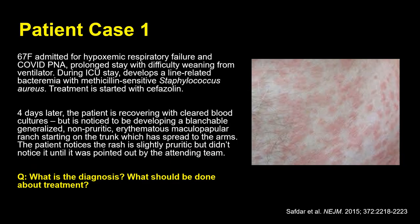Case 1: A 67-year-old female admitted for COVID-19 pneumonia requiring a prolonged ICU stay develops a line-related staph aureus bacteremia and is started on cefazolin. Four days later, she is discovered to have developed a blanchable, non-pruritic, generalized erythematous maculopapular rash with spread from the trunk to the extremities. The patient didn't notice the rash until the team pointed it out. What is the diagnosis, what are the possible culprits, and what should be done about treatment?